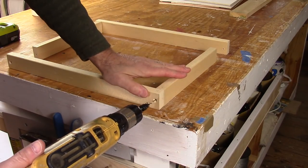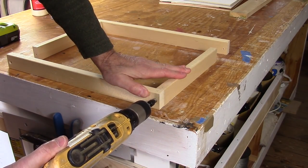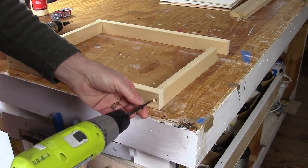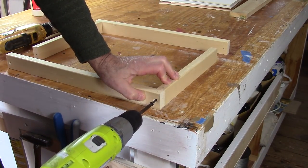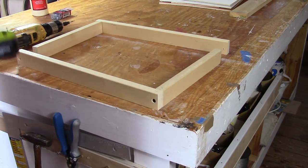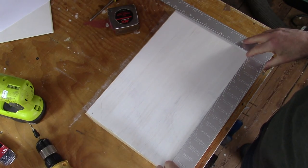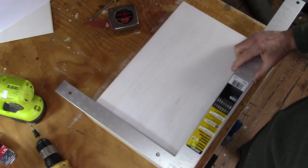The first step was to make the bottom of the paint box. Here I'm pre-drilling and using drywall screws, one screw for each joint. If you want your box to be square, you have to make sure that your plywood bottom is nice and square.